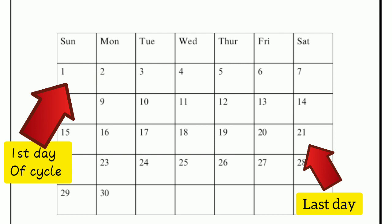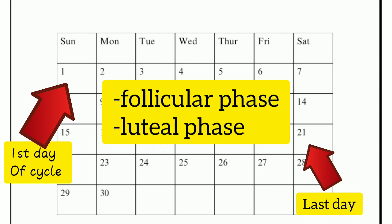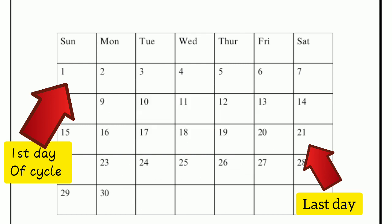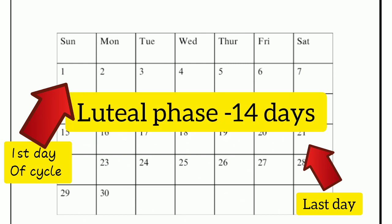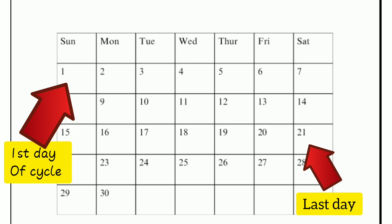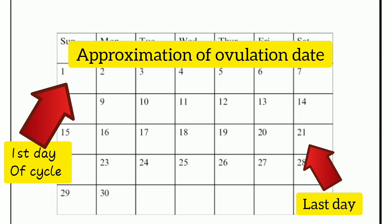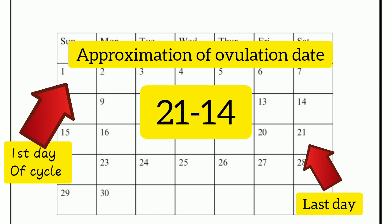Remember that the menstrual cycle usually has two phases: the follicular phase and the luteal phase. The luteal phase is always a constant of 14 days. So to approximate the ovulation date, you take the length of the cycle — which is 21 days — minus 14 days of the luteal phase.